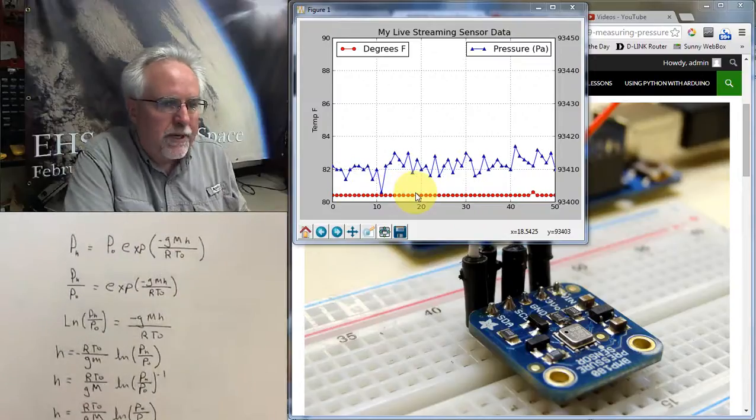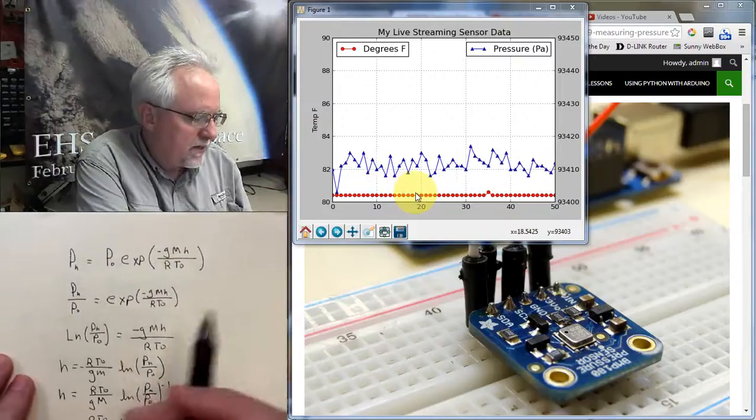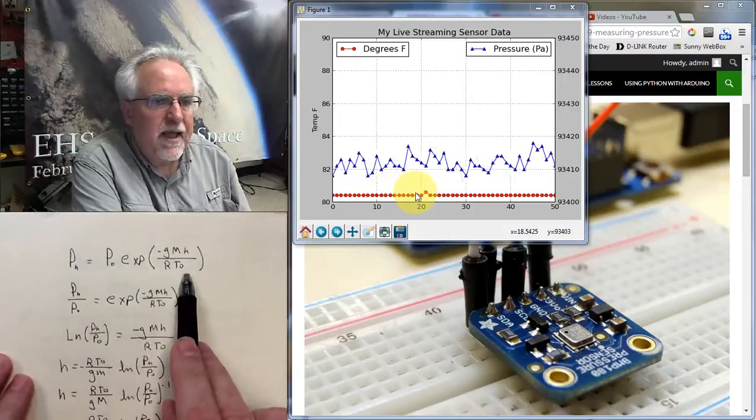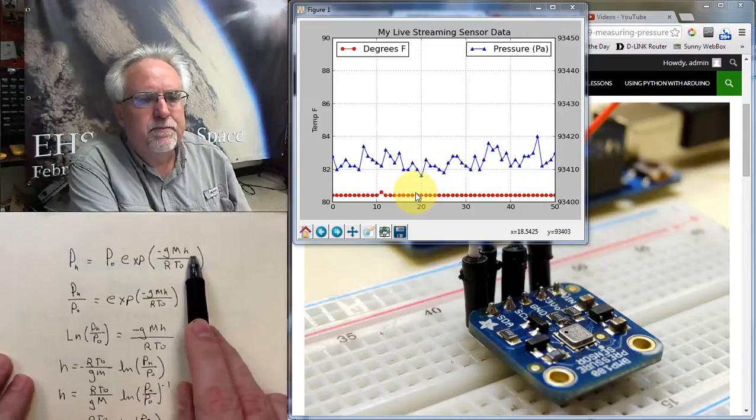We started with this equation, pH is equal to p0 exponential minus gmh over RT, and we want to solve for H, so we want to get H by itself.